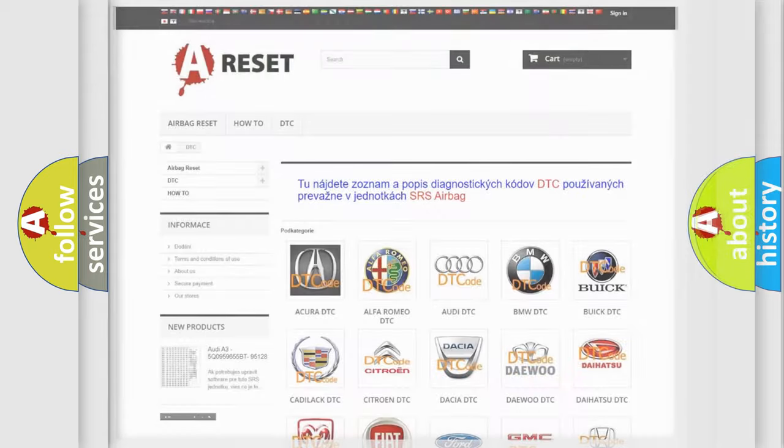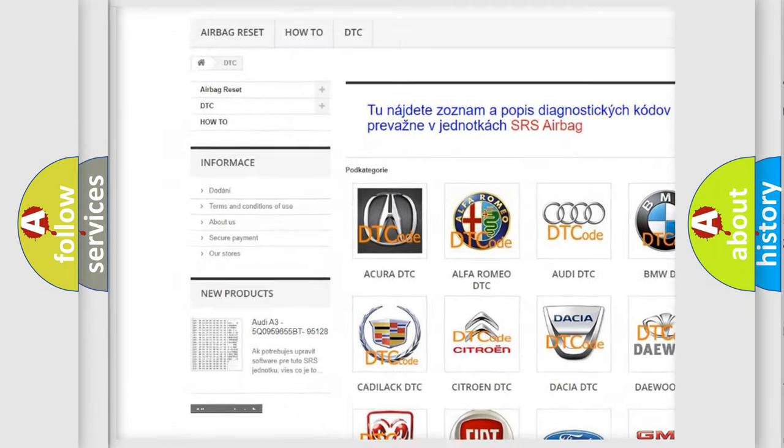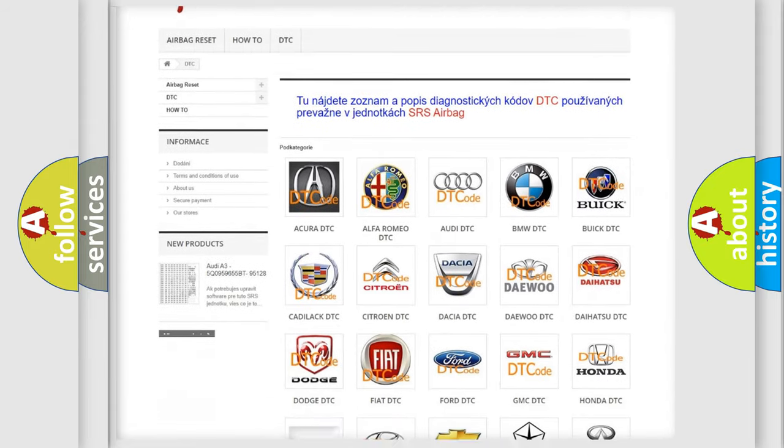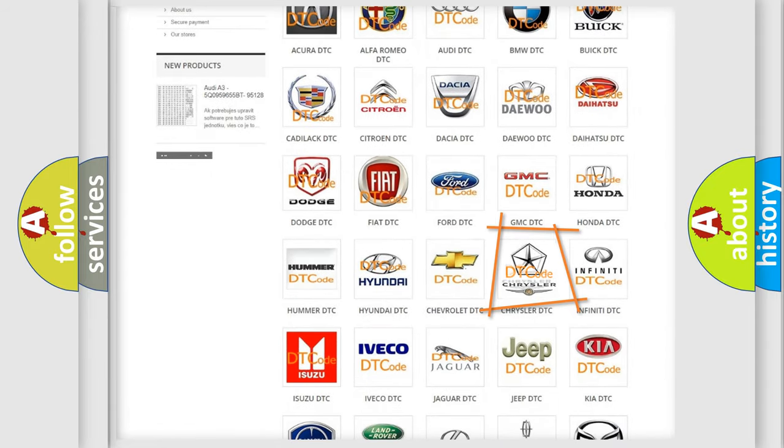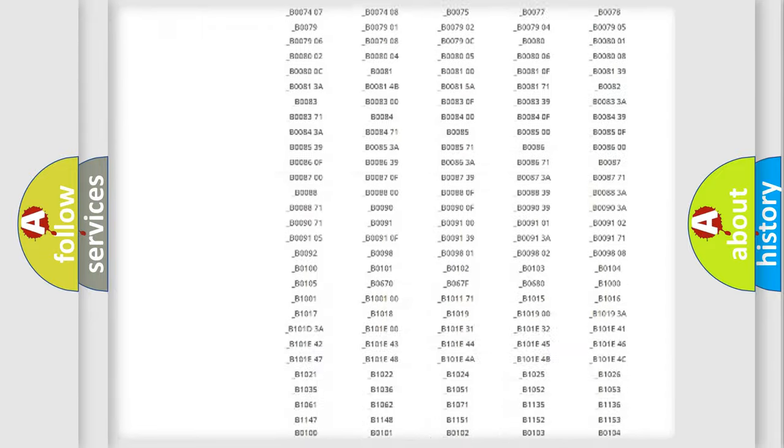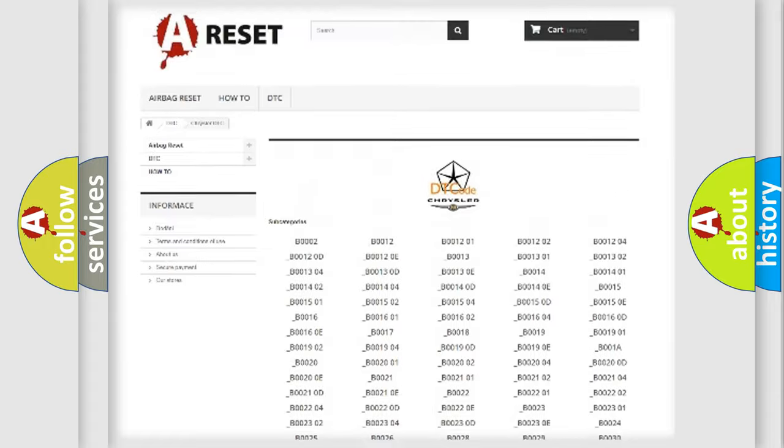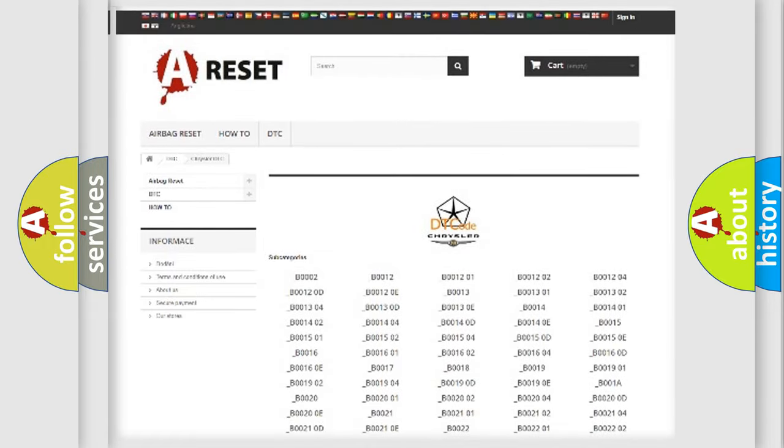Our website airbagreset.sk produces useful videos for you. You do not have to go through the OBD2 protocol anymore to know how to troubleshoot any car breakdown. You will find all the diagnostic codes that can be diagnosed in Chrysler vehicles, and also many other useful things.